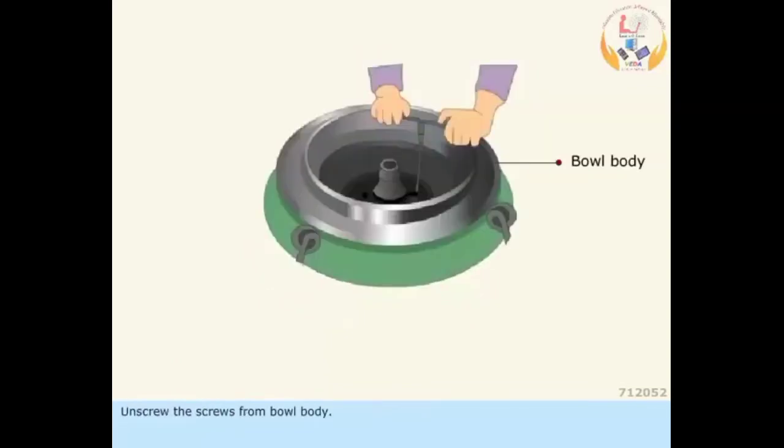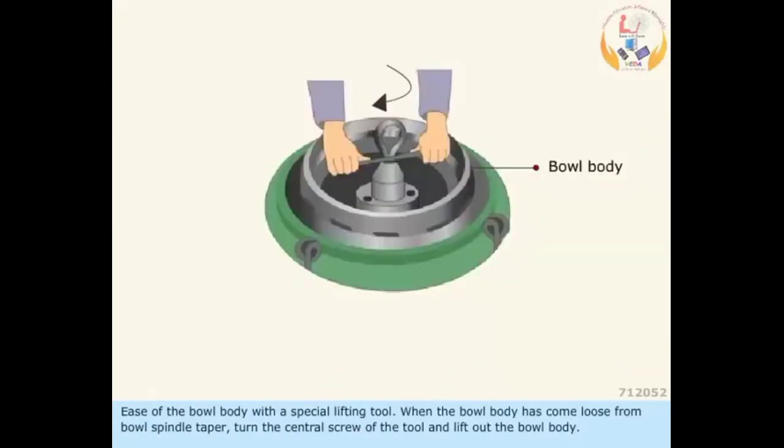Unscrew the screws from the bowl body. Ease off the bowl body with a special lifting tool. When the bowl body has come loose from the bowl spindle taper, turn the central screw of the tool and lift out the bowl body.